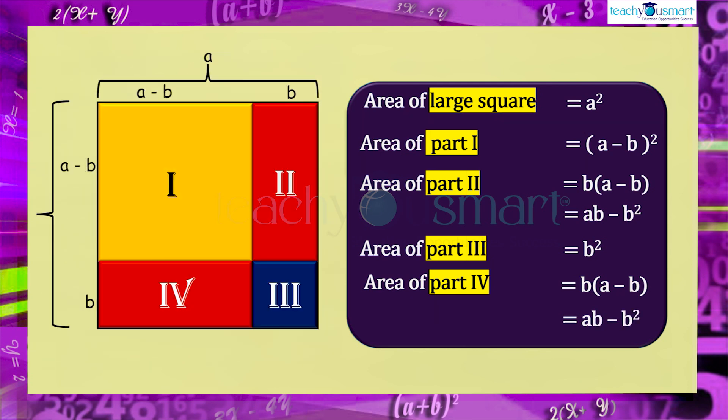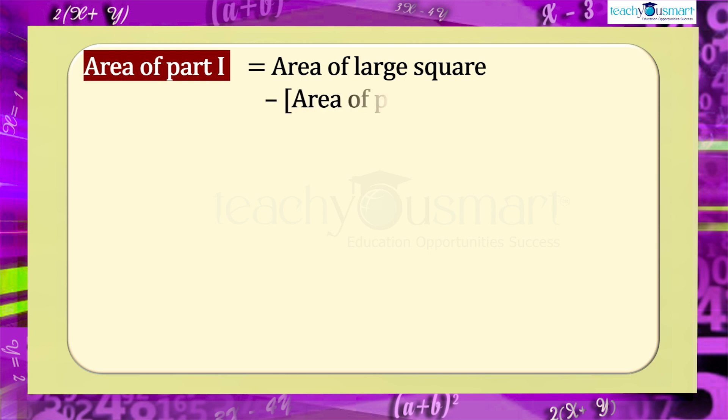We can say that to get the area of part one, we have to subtract the area of parts two, three, and four from the whole area. Area of part one equals area of large square minus area of part two plus area of part three plus area of part four.